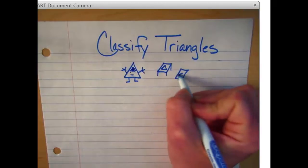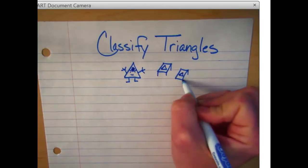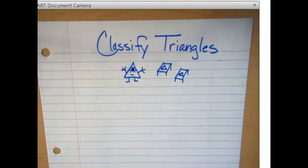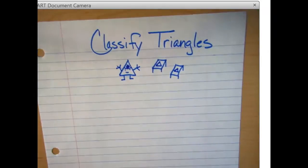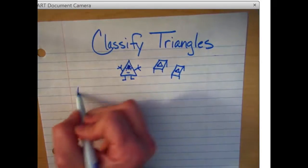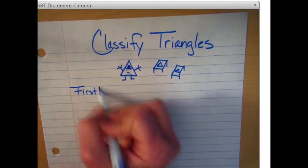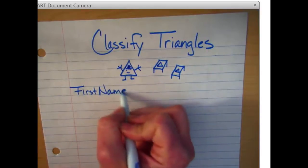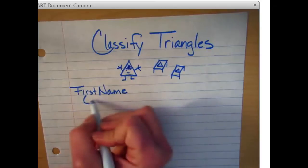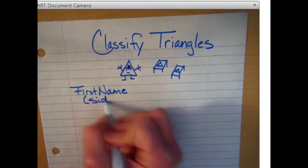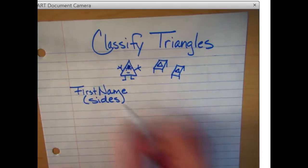So we're going to learn how to name baby triangles just like they do in the Triangle Hospital. We're going to give them a first name and a last name. Their first name depends on their sides. We're going to look at their sides only for their first name.